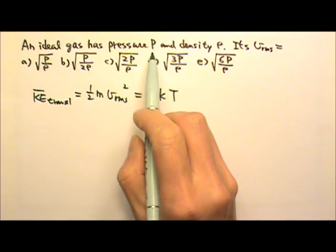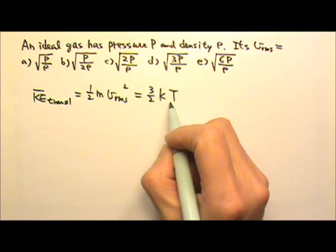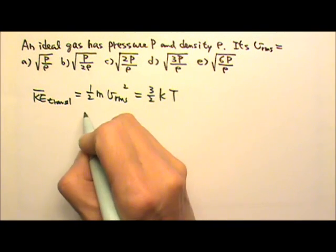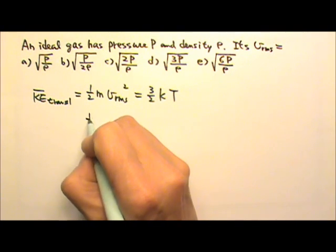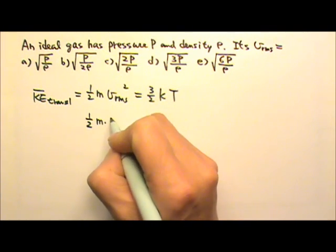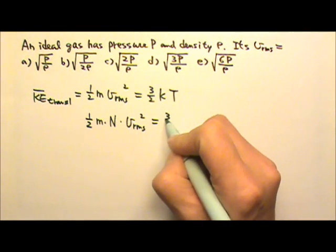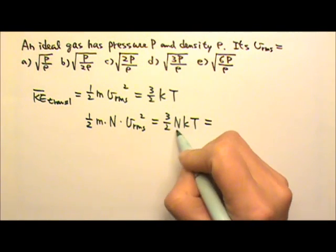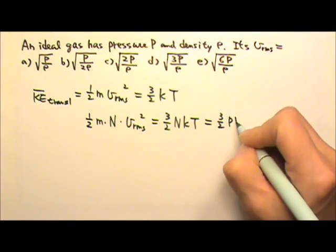Right now we have information about pressure. That means we can try to change this into nkT, and then we will have nkT equals pV. If I multiply both sides by the number of molecules n, I get one-half m times n times the root mean square speed squared equals three-halves nkT. And nkT equals pV, so this equals three-halves pV.